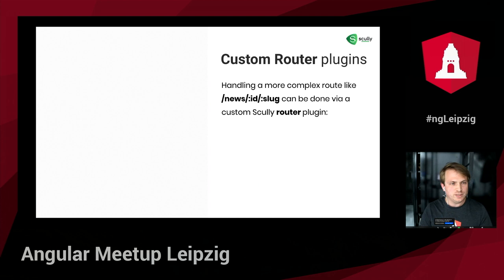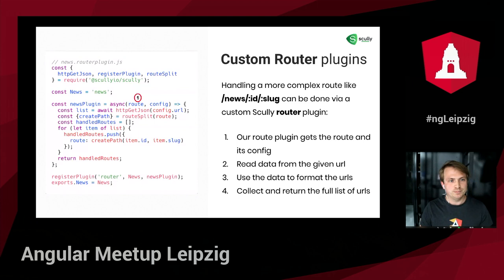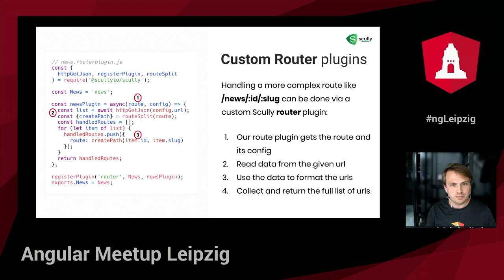For a more complex route — like `/news/:id/:slug` — we can define our own custom Scully router plugin. The plugin is essentially just a function that takes the route declaration and its configuration. In step one we fetch the required data, then using a convenience `routeSplit` method from Scully we get back a helper method called `createPath` that we can use with the data to format all the routes. Finally, the function returns the list of routes that need to be handled.